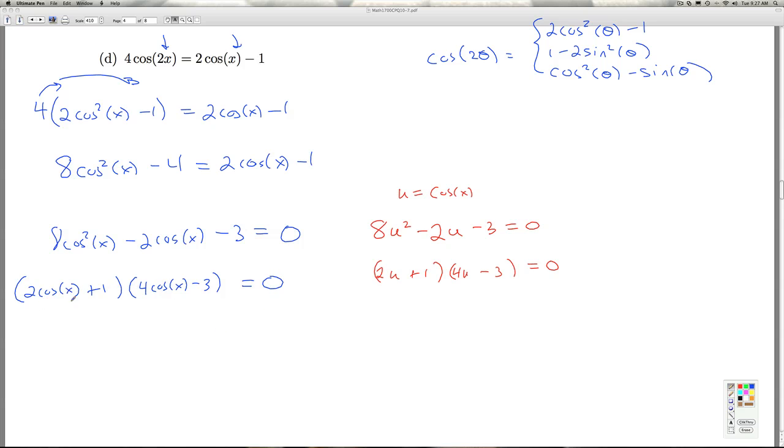And now I have the product of two real numbers that give me 0. That means that I've got either this is 0 or this is 0. So from here, I get cosine x is minus 1 half. From here, I get cosine x is 3 quarters.